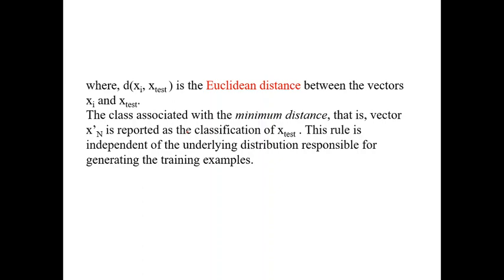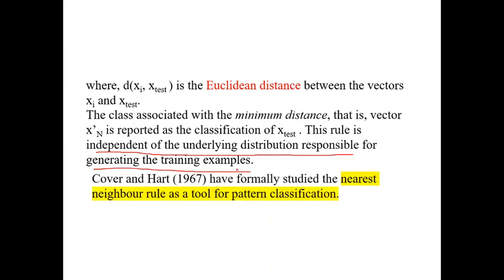Where D of XI comma X test is the Euclidean distance between the vector XI and X test. The class associated with the minimum distance, that is the vector X dash N, is reported as the classification of X test. This rule is independent of underlying distribution responsibility for generating training examples.